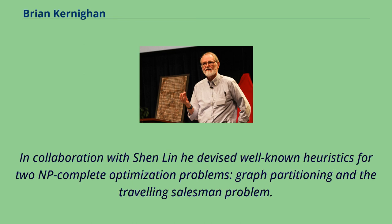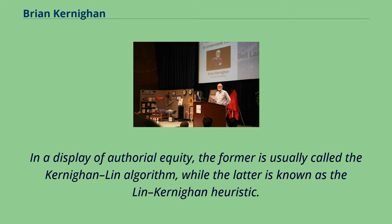In collaboration with Shen Lin, he devised well-known heuristics for two NP-complete optimization problems: graph partitioning and the traveling salesman problem. In a display of authorial equity, the former is usually called the Kernighan-Lin algorithm, while the latter is known as the Lin-Kernighan heuristic.